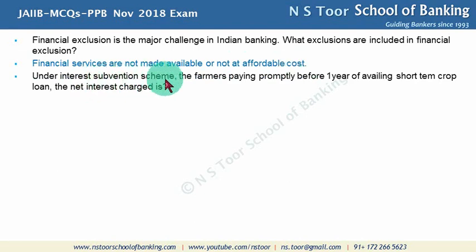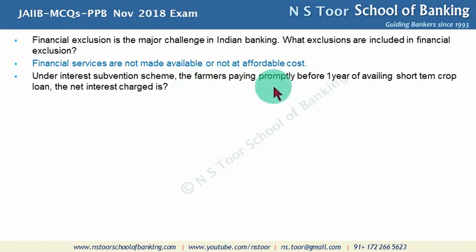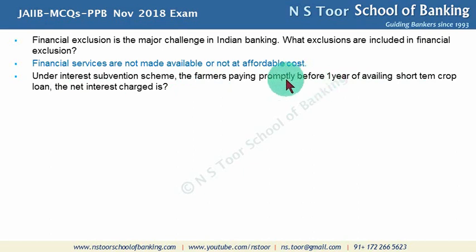Under the Interest Subvention Scheme, for farmers paying promptly before 1 year of availing a short-term crop loan, the net interest charged is 4% per annum. The normal interest rate charged from the farmer is 7%, and with an additional 3% subsidy available for prompt payment, the effective rate becomes 4% per annum.